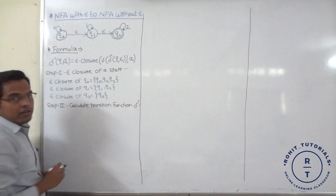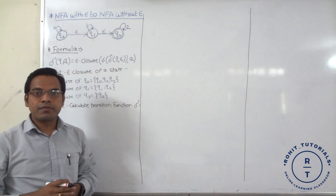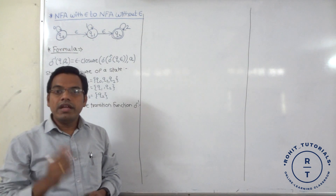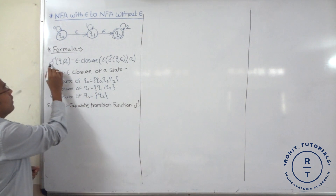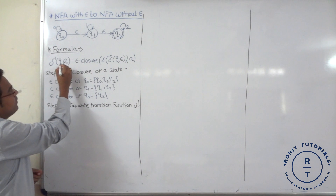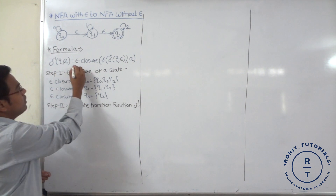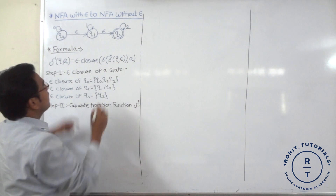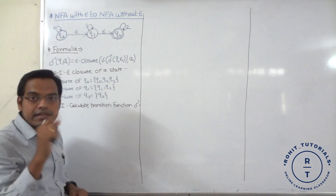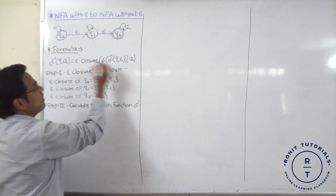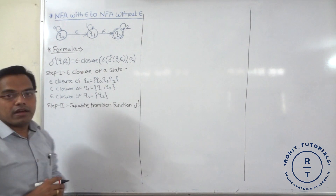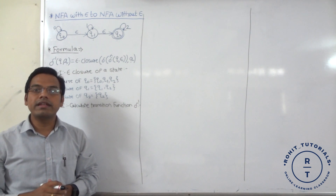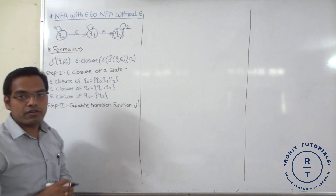What is this epsilon symbol we have already learned in our previous video. For conversion of NFA with epsilon to NFA without epsilon, we require one important formula. Delta dash of any state for any input is equal to epsilon closure of delta cap of any state for that epsilon symbol, and the input state is as it is. With the help of this formula we can convert the NFA with epsilon to NFA without epsilon, because we are generating the new state with the help of this particular formula.